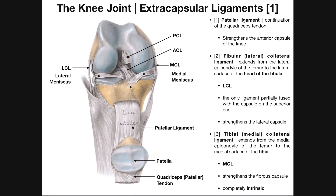Now let's talk about the contents of the knee joint. Here we have our PCL, or posterior cruciate ligament, and here's the ACL, anterior cruciate ligament. For now, just understand that they are intracapsular ligaments. We'll talk about these more in the next video and also how to differentiate them — because how do you tell the difference between the PCL and the ACL when we can see them both in the same view? We'll talk about that in the next video.